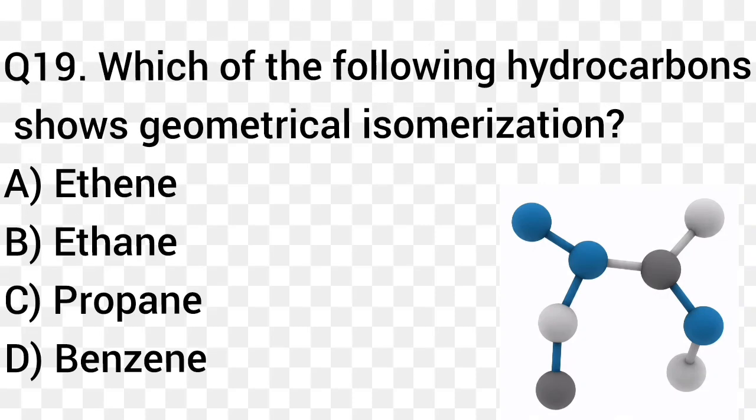Question number 19. Which of the following hydrocarbons shows geometrical isomerism? Option A: Ethyne. Option B: Ethane. Option C: Propane. Option D: Benzene. The right answer is option A, Ethyne.